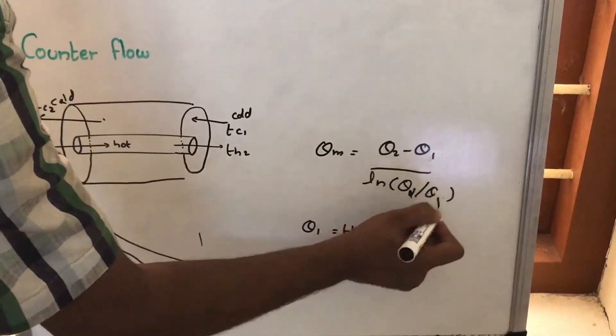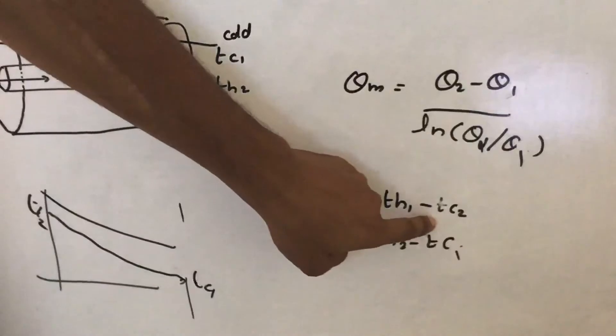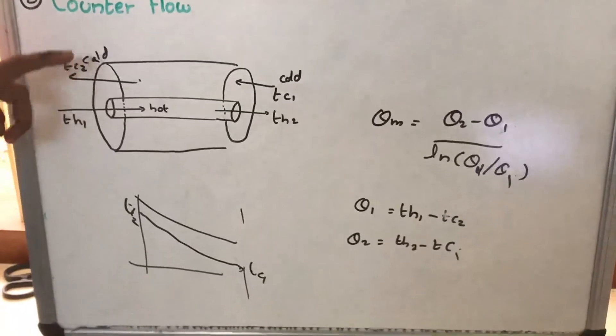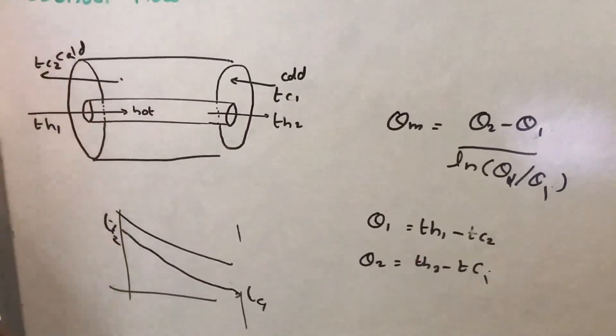But the difference is, theta 1 is equal to TH1 minus TC2. That is, here on the left side there is TH1 and TC2, so TH1 minus TC2. Theta 2 is equal to TH2 minus TC1. So that is the difference.